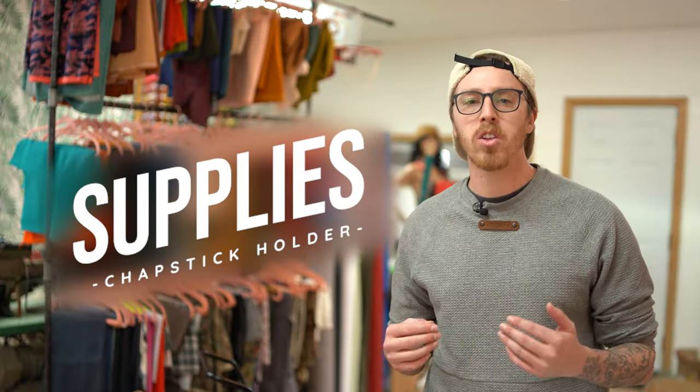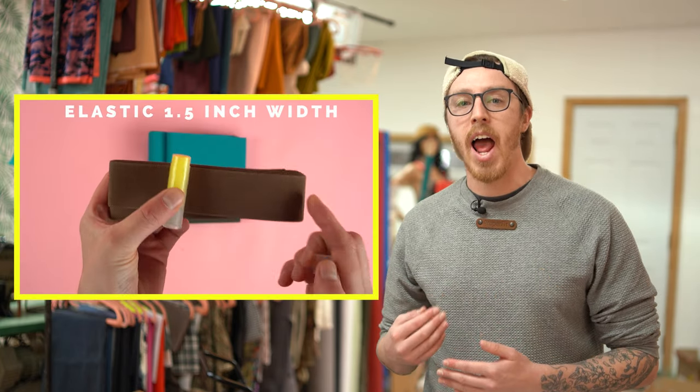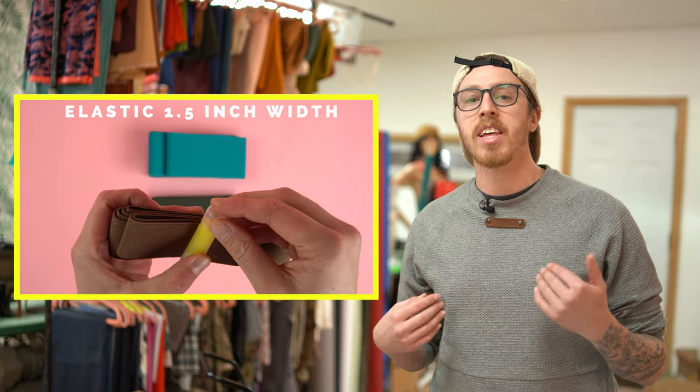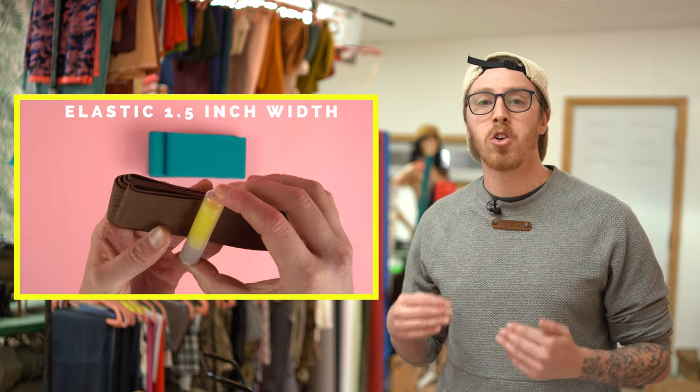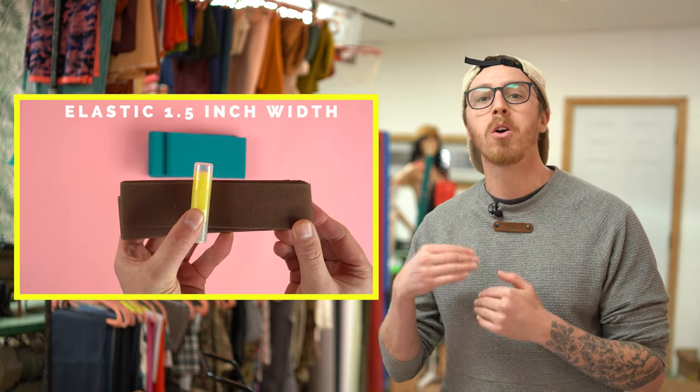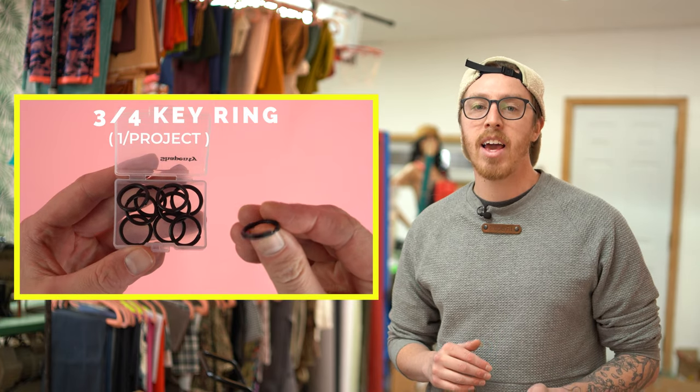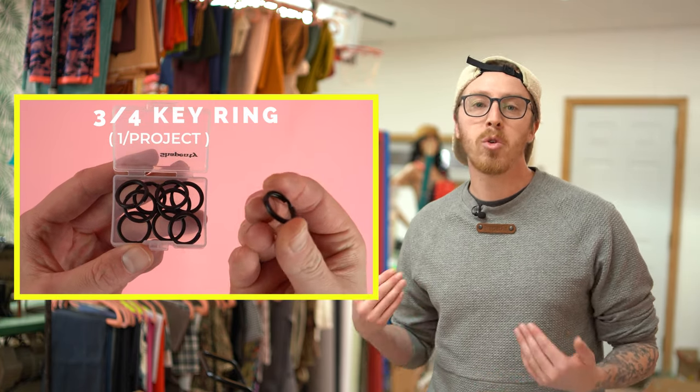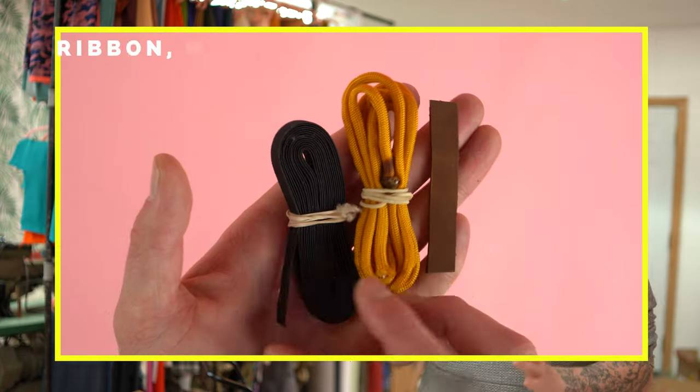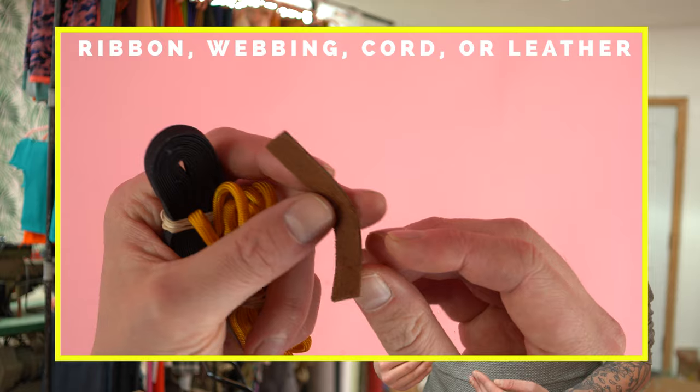The supplies you're gonna need for the chapstick holder are similar to the supplies for the wallet and I recommend an inch and a half or an inch and five eighths elastic. Both of these work great for a chapstick. They go right up to the edges without going over. You'll need one key ring and I recommend matching the key ring size to your wallet size. And your ribbon or webbing, or you can use your cord or leather. So cut out your pattern piece and let's get started.